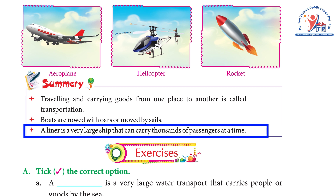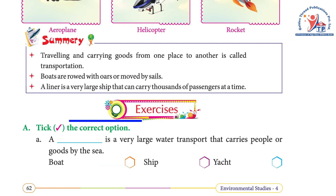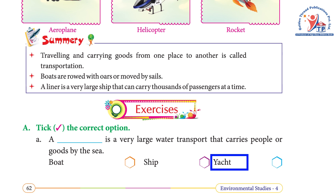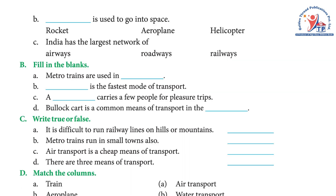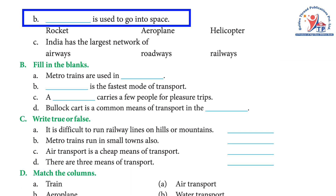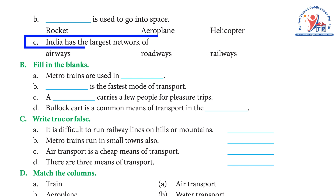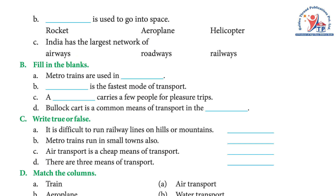Exercise A: Tick the correct option. A) A blank is a very large water transport that carries people or goods by the sea. Options: boat, ship, yacht. Answer: ship. B) Blank is used to go into space. Options: rocket, aeroplane, helicopter. Answer: rocket. C) India has the largest network of blank. Options: airways, roadways, railways. Answer: roadways.